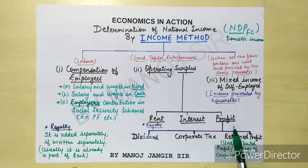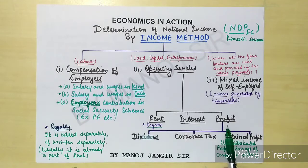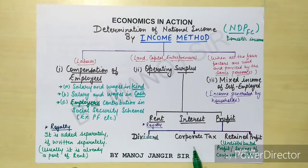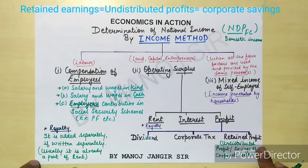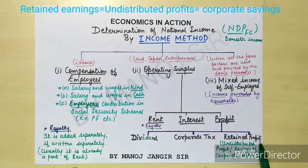Sometimes profit is not given directly. In that case, you use the sub-parts of profit. If a company earns profit, it gives dividend to shareholders; that return is called dividend. There is also corporation tax paid by the company. The remaining profit kept by the company is called undistributed profits, retained profits, retained earnings, undistributed earnings, or savings of the corporate sector.